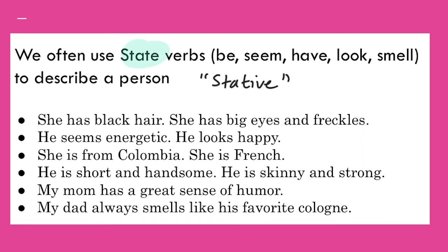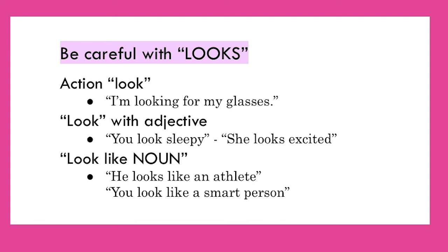Here are some examples of stative verbs — also called state verbs. Stative verbs include: be, seem, have, look, smell. She has black hair. She has big eyes. He seems energetic. He looks happy. She is from Colombia. She is French. He is short and handsome. He is skinny and strong. My mom has a great sense of humor. My dad always smells like his favorite cologne. Be very careful with 'looks' — it has a few different meanings. It can be an action: I'm looking for my glasses — that's an action, so you will not use simple present. But 'you look sleepy' or 'you look excited' — that is a state, so it's simple present. 'He looks like an athlete' — that is also a state.